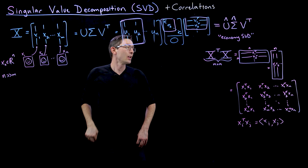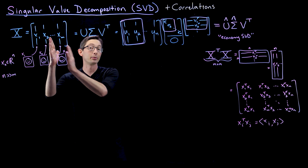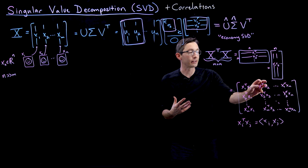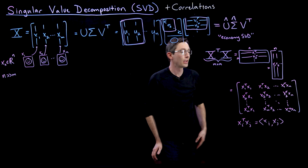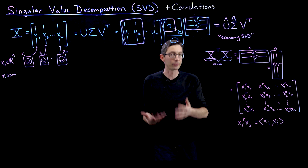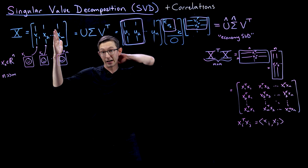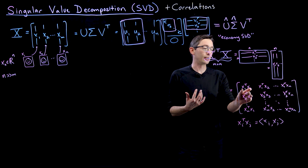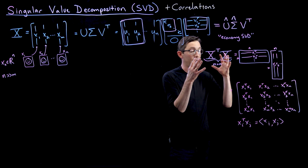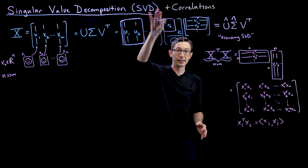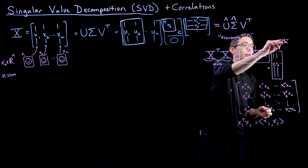If these columns are people's faces, then the i,j-th entry of this matrix is the inner product between person i and person j's face. A large value means those two people have similar face structure; a small value means they're nearly orthogonal — very different faces. Because this matrix is symmetric and positive semi-definite, it guarantees non-negative real eigenvalues that have a direct correspondence to the singular values sigma.